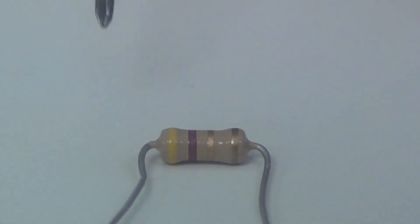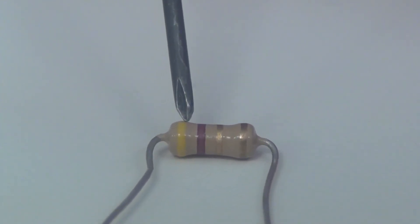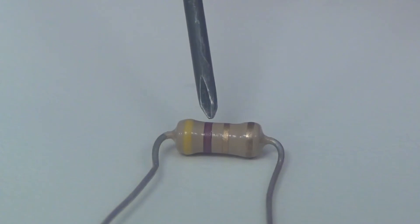This resistor has yellow, which is 4, violet is 7, gold gives you 0.1, which means you bring the decimal over by 1, and you have a 5% tolerance, which will give you a 4.7 ohm resistor.